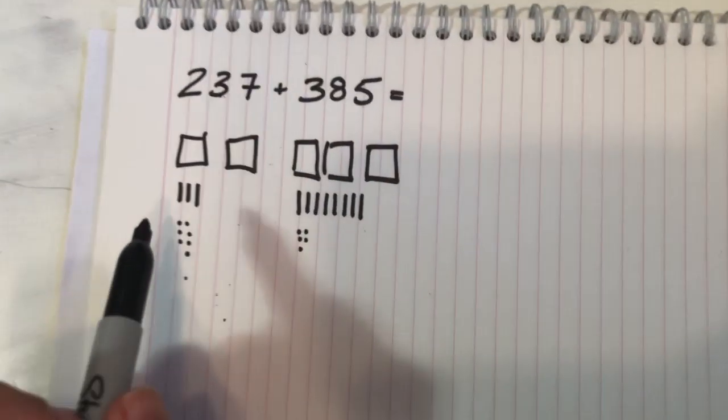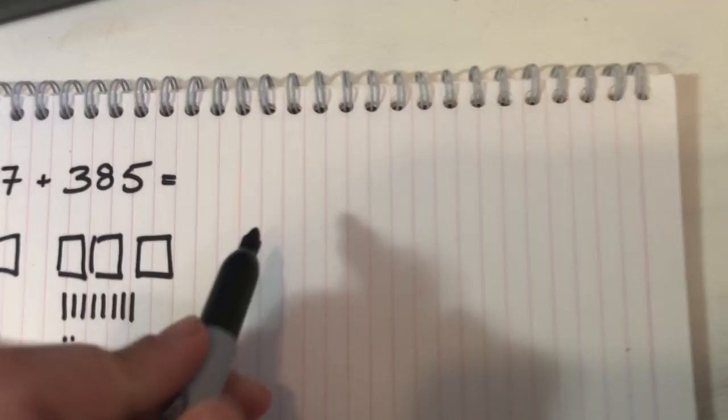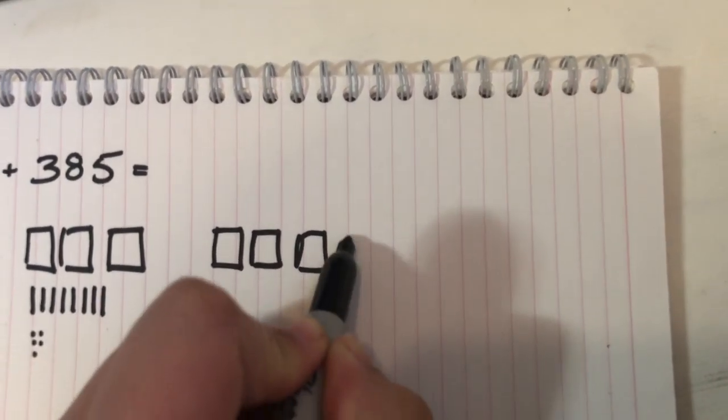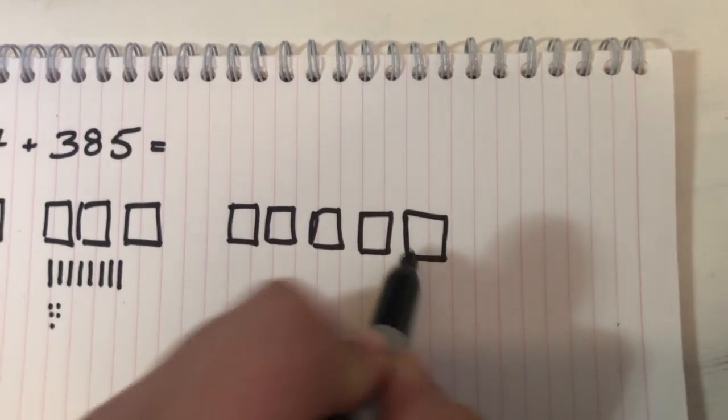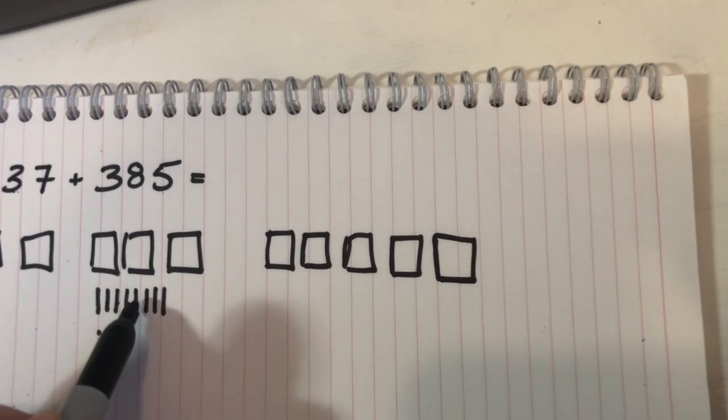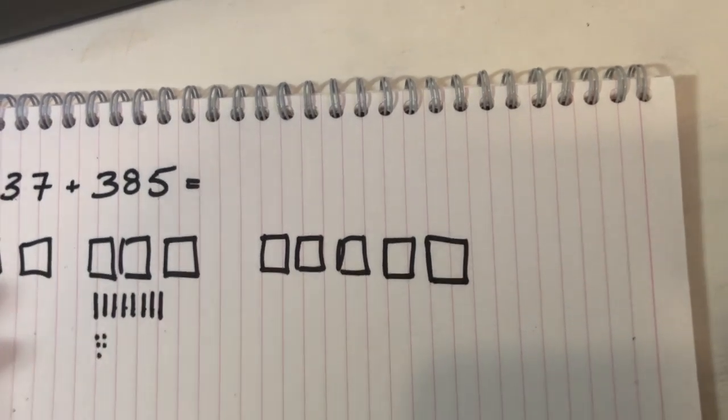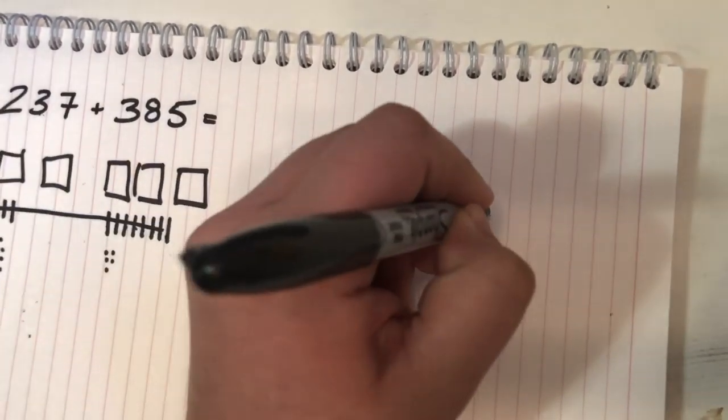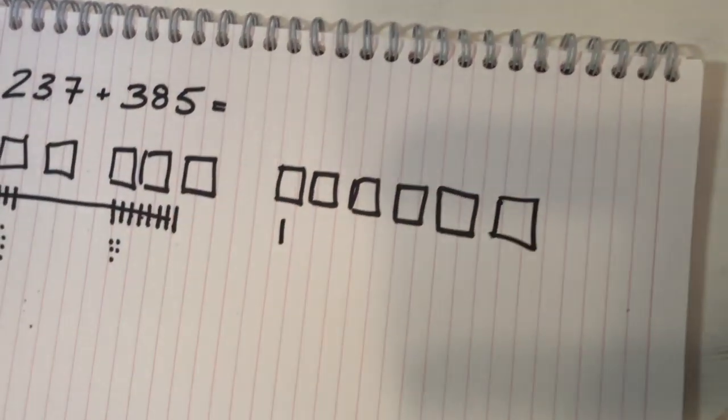So how we'll add this up is we'll start with the 100s. So you'll see 1, 2, 3, 4, 5, 6, 7, 8, 9, 10, 11. So we should actually just take all of those out, add a 100 block and add the 1.